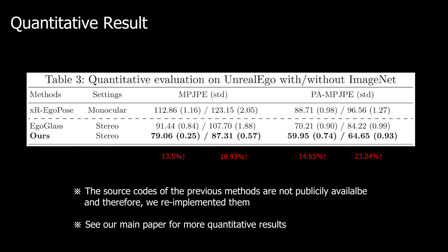We provide a quantitative result on the UnrealEgo test split. Here, we also show the effect of ImageNet pre-training for the encoder backbone. Please note that none of the previous works released their source code. Therefore, we re-implemented their method.